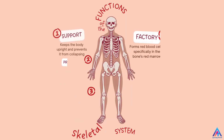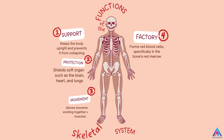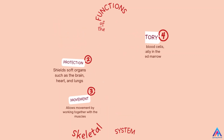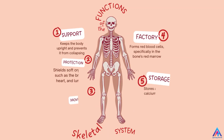Number four, it is a factory of red blood cells. Bone marrow which is found inside the bone is a factory which gives rise to the red blood cells. And number five, it stores calcium and releases calcium to the body.